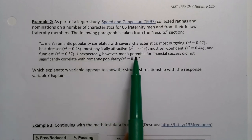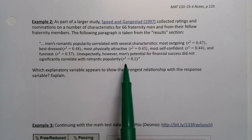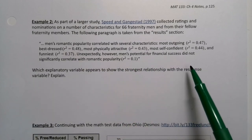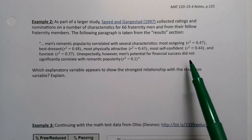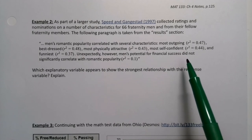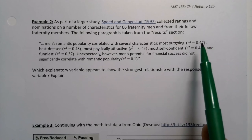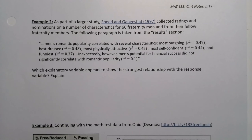Unexpectedly however, men's potential for financial success did not significantly correlate with romantic popularity. R-squared is equal to 0.1. Now you won't always see it in a paragraph like this. Sometimes you'll see them in a table listed out with all these different R-squared values. So what you want to do is figure out which one appears to show the strongest relationship with the response variable.